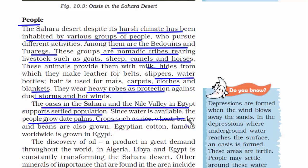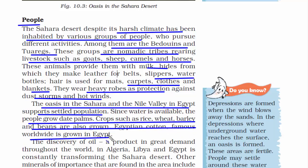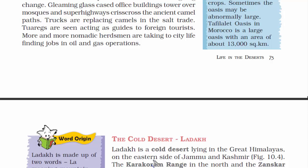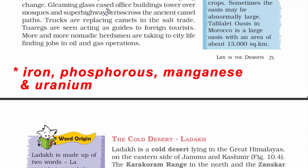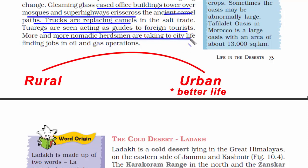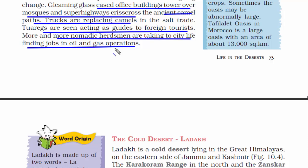People grow date palms and crops such as rice, wheat, barley and beans. Egyptian cotton is famous throughout the world. Algeria, Libya and Egypt have discovered oil, which is of great economic value, and due to this, the Sahara Desert is being recognized worldwide. Other important minerals found there include iron, phosphorus, manganese and uranium. Life is changing in the Sahara — skyscraping towers are being built, super highways are constructed, and camels are being replaced with trucks. The place is also attracting tourists, and as the nation's economy grows, many people from rural areas migrate to cities to secure jobs in factories.